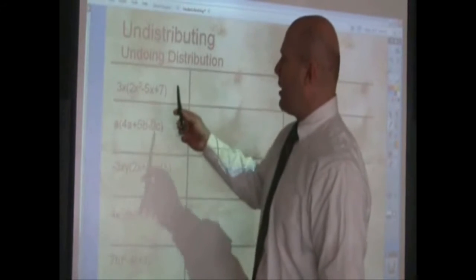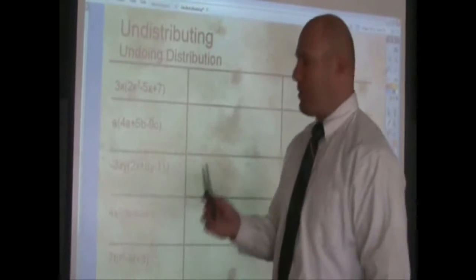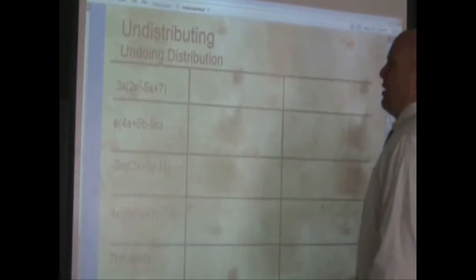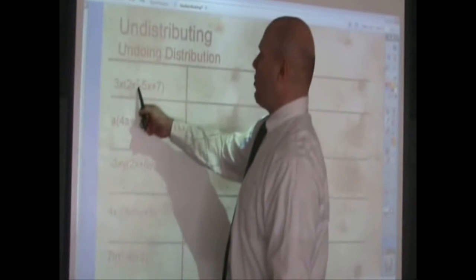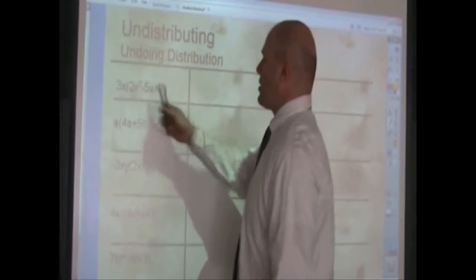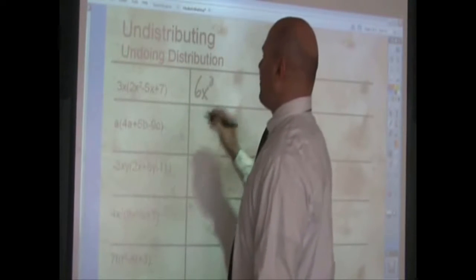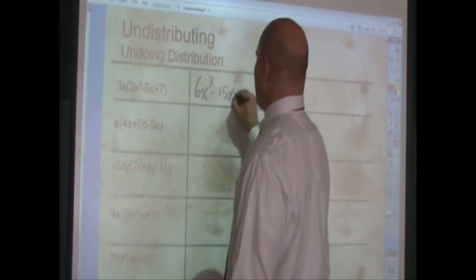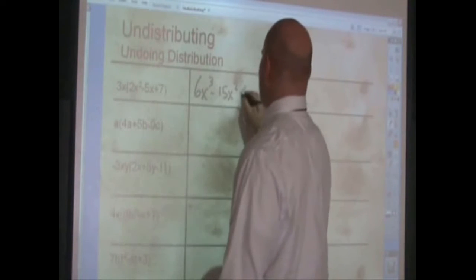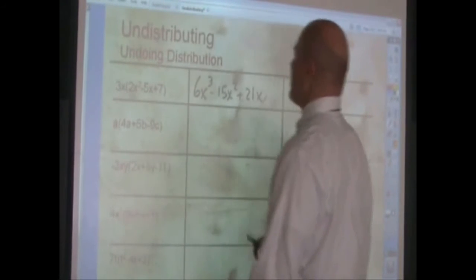All right, I've got five problems listed here. I'm going to distribute all those out, I'm going to do this pretty quickly. 3x times the quantity 2x squared minus 5x plus 7, 3x times 2x squared makes 6x cubed. 3x times negative 5x is negative 15x squared, and 3x times 7 is 21x, so there's the first one.